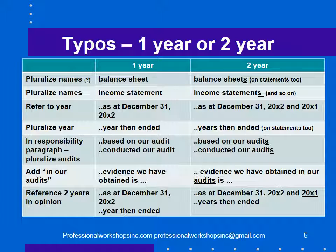Another thing to check is whether you're giving a one-year or a two-year opinion. In a two-year opinion, the auditor's opinion extends to two years, and it must be very clear that it does. This is typically for public companies, and regulators are particularly picky about ensuring the auditor references both years. Standard setters are clear that we pluralize: in a one-year opinion we say 'the balance sheet,' but in a two-year report we say 'the balance sheets' — and similarly 'the income statements' and so on.